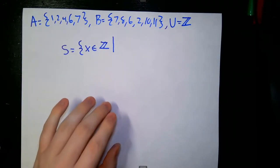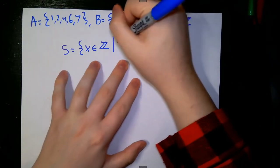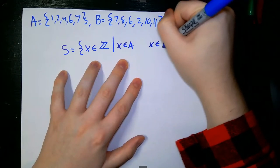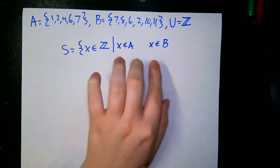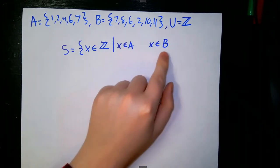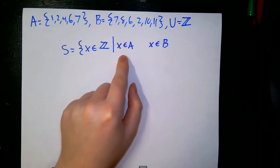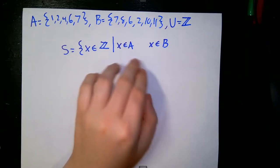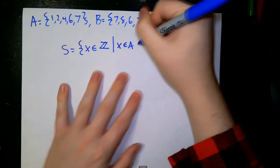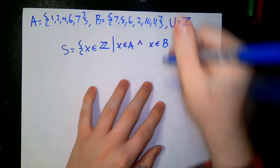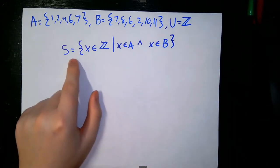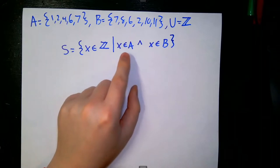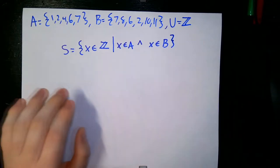We can write these using propositional logic: 'x is an element of A' and 'x is an element of B.' We want the predicate to be true when both are true, since we only want to include x's that are in both A and B. The only way our predicate is true is if both are true simultaneously — a perfect scenario to use a conjunction. So S is the set containing integers such that those integers are both in A and in B.